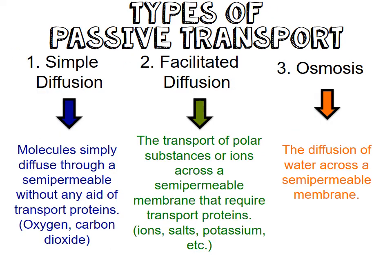There are three types of passive transport to know. The first is simple diffusion, where molecules simply diffuse through the semipermeable membrane without any aid of a transport protein — things like carbon dioxide and oxygen. The second is facilitated diffusion, where the transport of polar substances or ions across the semipermeable membrane requires transport proteins. And last but not least, we have osmosis, which is the diffusion of water across a semipermeable membrane. So we have diffusion without transport proteins, with transport proteins, and then the transport of water.